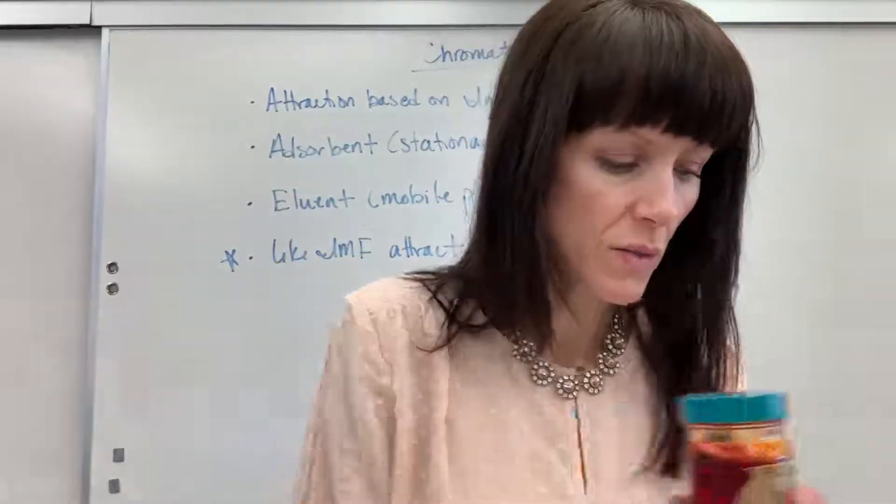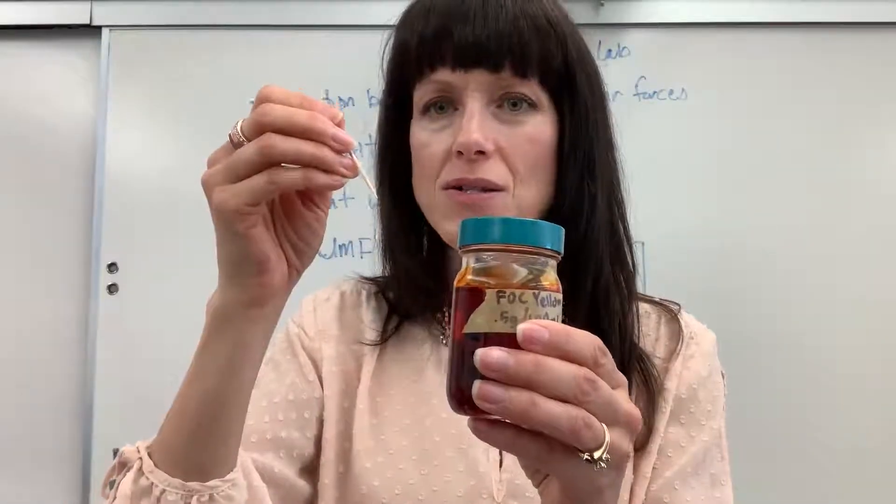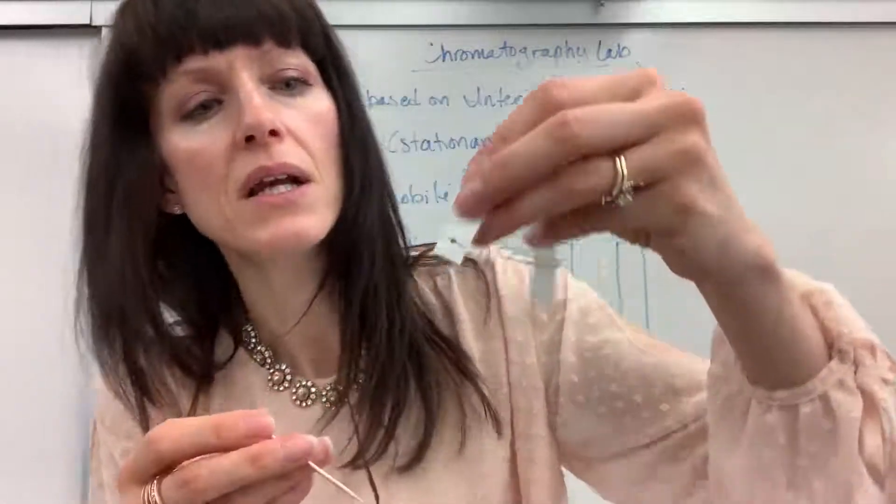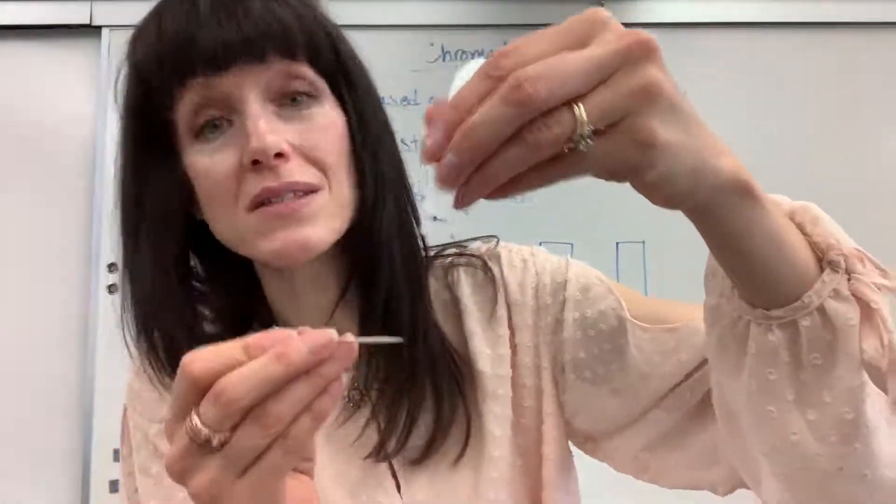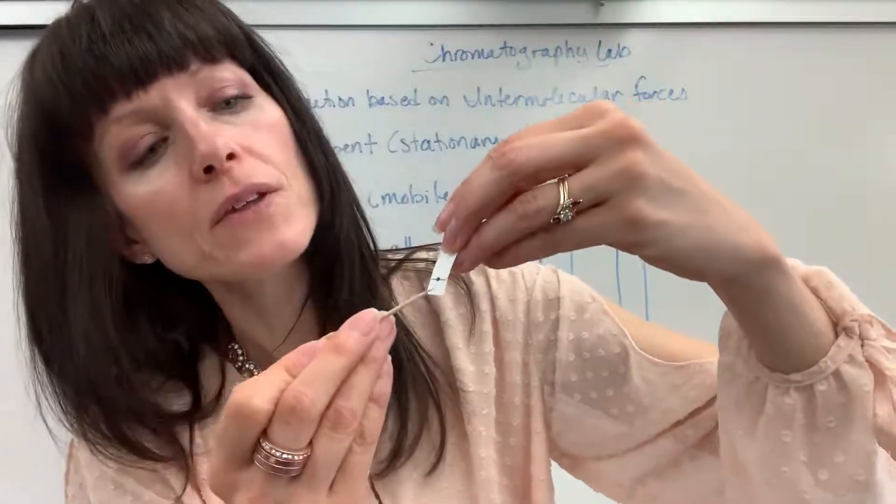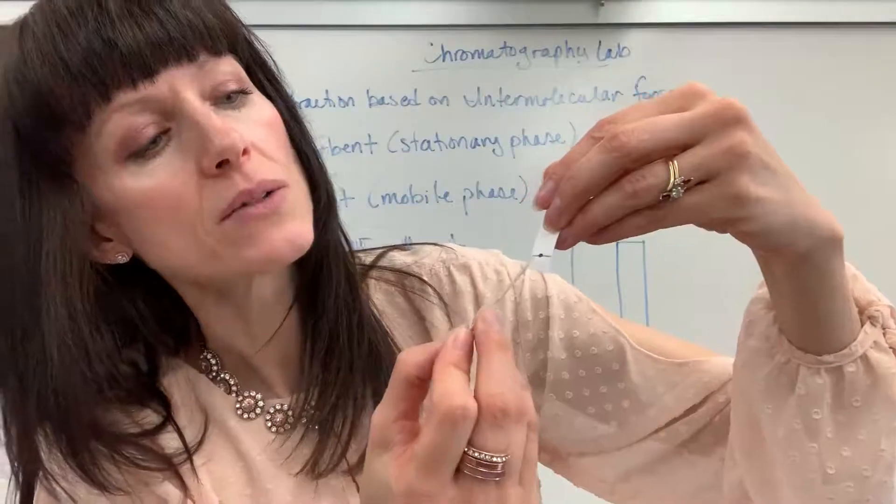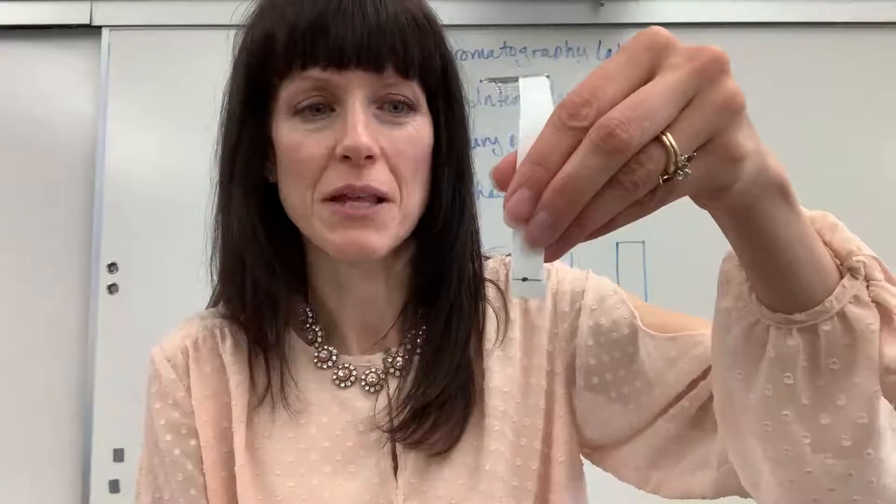What I have my students do is just take a toothpick, dab it into the color, and then where their pencil line is, the pencil line is usually about five millimeters above the bottom of the stationary phase, the filter paper. They'll just put a dot and they might have to do that a couple of times, dip it in that yellow six and then dot it so that you can have a nice visible ink dot right there.